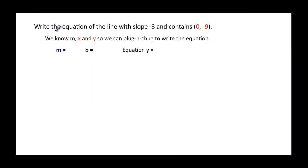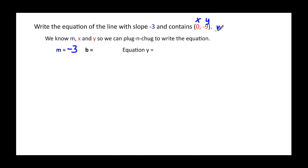So our first example: write the equation of a line with a slope of negative three that contains the point (0, 9). Well, if you look at this, we know that slope is going to be negative three. There are two ways to do this problem. The first way is to recognize that x is equal to zero and y is equal to negative nine.